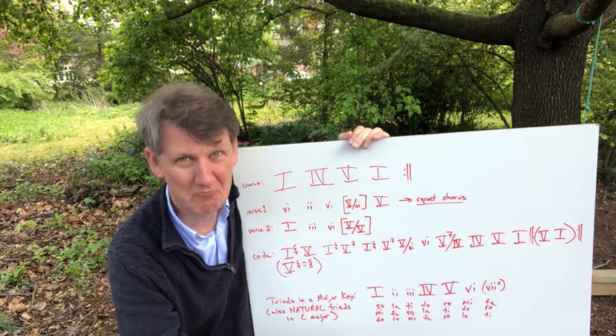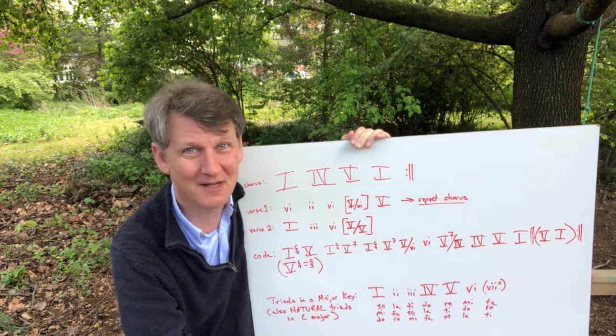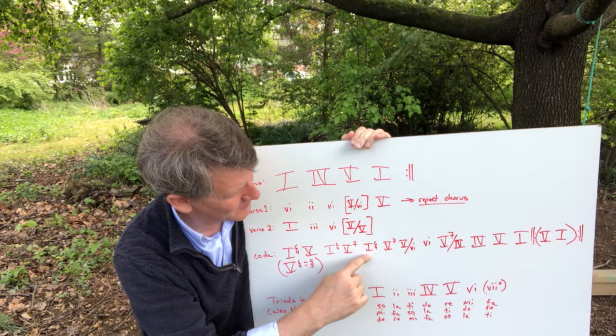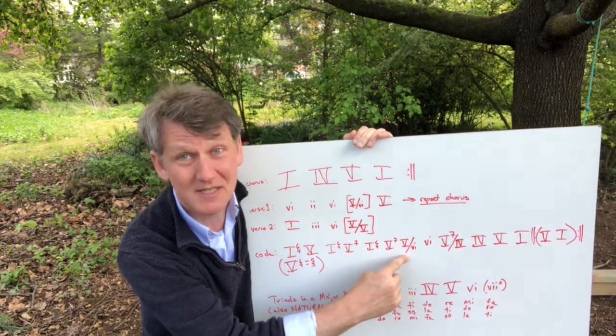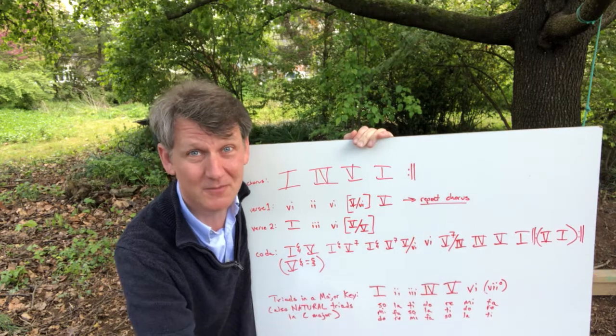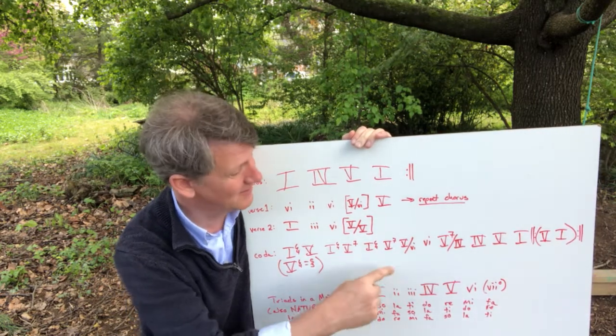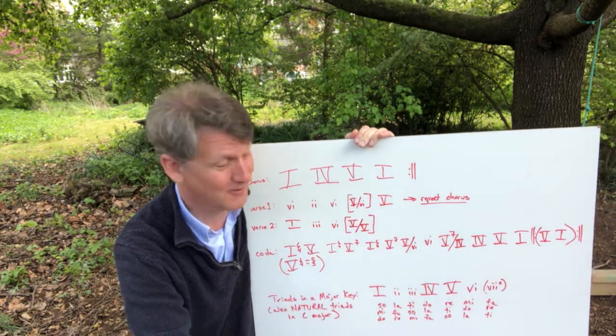SO SO DO SO SO FA RE TI. We added a seventh. Again, don't worry about that until it's time to learn it. SO SO DO SO SO FA RE TI, SI MI. We had another altered solfege syllable, and that was a good hint that there was maybe an applied dominant going on.